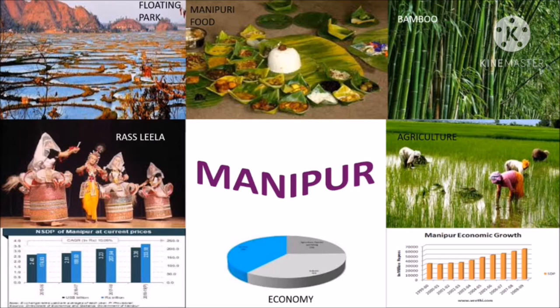Manipur is the first state in India to have set up the four-pillar infrastructure of the National e-Governance Plan: common service center, statewide area network, state data center, state portal and state service delivery gateway, and e-forms. Oilseed production in Manipur stood at 464 metric tons during 2018-19 and 401 metric tons during 2019-20.